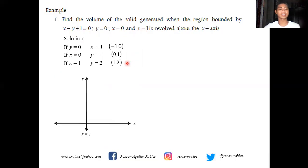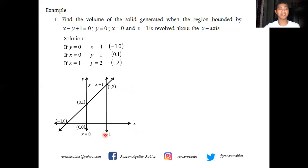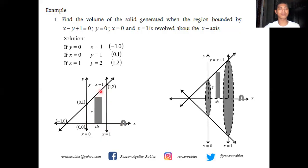We trace the lines. The points of intersection are (−1, 0), (0, 1), and (1, 2). We draw the line y equals x plus one, then x equals zero and x equals one. The region is bounded above by y equals x plus one, between two vertical lines x equals zero and x equals one, and the x-axis is our axis of revolution. Since the axis of revolution is horizontal, we take a vertical element. Here r is the radius and dx is the width. Revolving this region over the x-axis generates our solid.